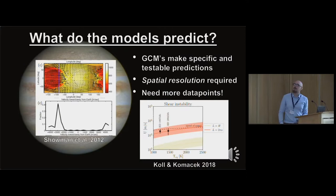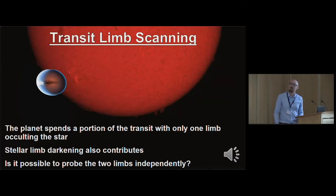What I really want to do is this during transmission, because that's my specialty - what I'm interested in. Is there a way to break down the spatial resolution of the planet during primary transit, as the planet moves in front of the star? It's going to spend a portion of its time with only one limb in front of the star.